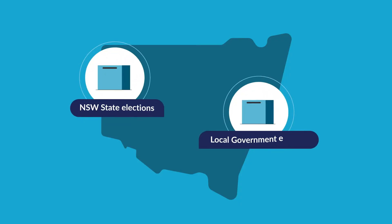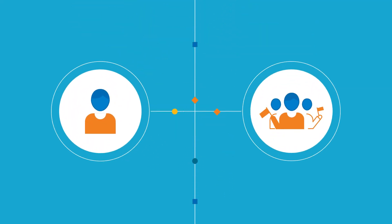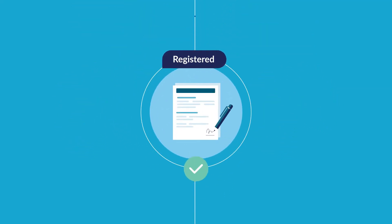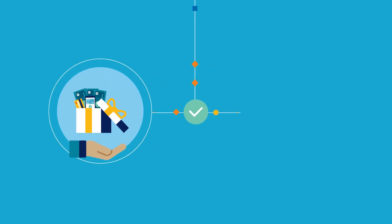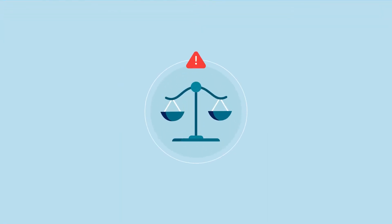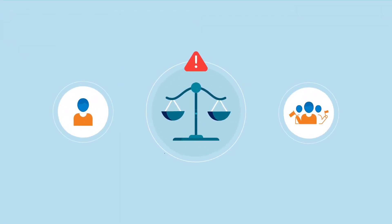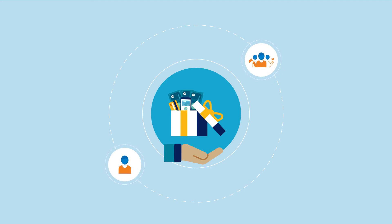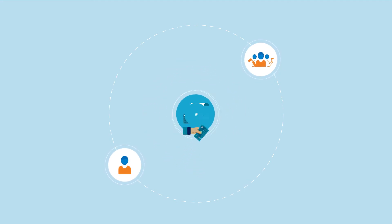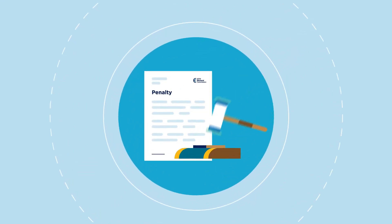At New South Wales state and local government elections, candidates and groups of candidates must be registered with the New South Wales Electoral Commission before accepting political donations and making payments for electoral expenditure. It's unlawful for a candidate or group to accept a political donation or make a payment for expenditure before being registered, and penalties can apply.